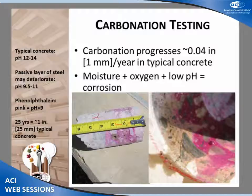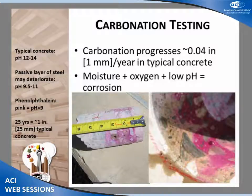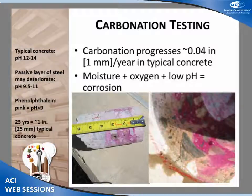We also tested for carbonation. Carbonation essentially lowers the pH in concrete, which destroys the protective passive film on the reinforcement. We use a phenolphthalein solution, which turns pink for a pH greater than 9. Anything that's not pink means the concrete is carbonated with an increased risk for corrosion — the passive layer will deteriorate between pH 9.5 and 11. One important observation was that carbonation penetrates deeper at a crack, and the same is also true for chloride.